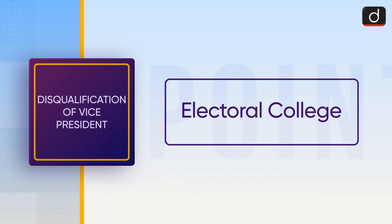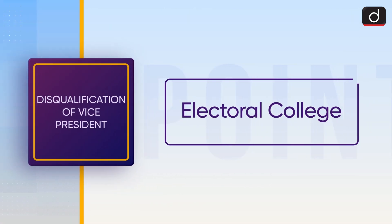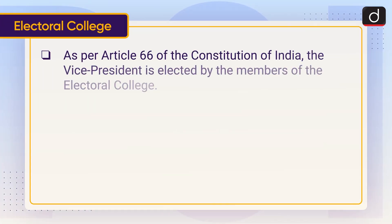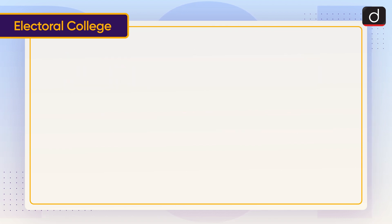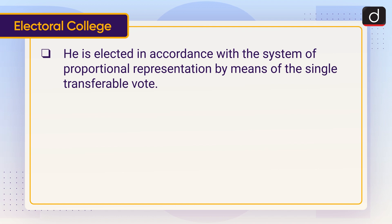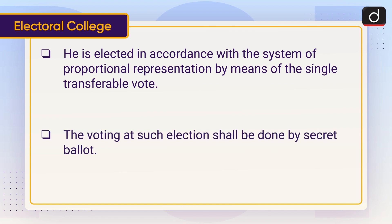Now let's understand about the electoral college. As per Article 66 of the Constitution of India, the Vice President is elected by the members of the electoral college. The electoral college consists of elected and nominated members from Lok Sabha and Rajya Sabha only. He is elected in accordance with the system of proportional representation by means of the single transferable vote, and the voting at such election shall be done by secret ballot.